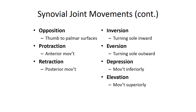Other types of synovial joint movements include: opposition, the movement of the thumb toward the surface of the palm or the pads of the other fingers, like when you snap to music; protraction, moving a body part anteriorly in the horizontal plane; retraction, the opposite, moving a body part posteriorly in the horizontal plane; inversion, a twist motion of the foot that turns the sole inward, elevating the medial edge; eversion, the opposite, turning the sole outward; depression, when a structure moves inferiorly, like opening the mouth; and elevation, when a structure moves superiorly, as when you close the mouth.